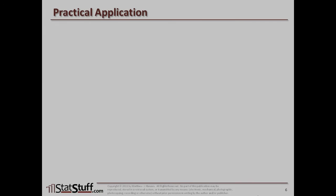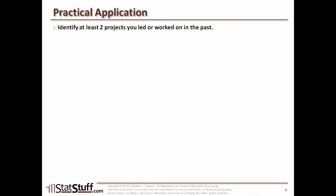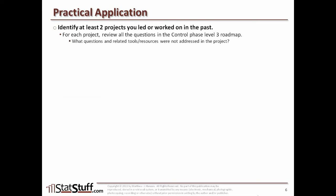Before we close this lesson, let's discuss how to apply some of these concepts in a practical way. Identify at least two different projects you may have led or worked on in your organization. For each project, review the level-three questions we went over for the control phase, and ask yourself which questions and related tools or resources were not addressed. If they weren't addressed, why not? And what different outcomes or results could have been realized if they had been addressed?